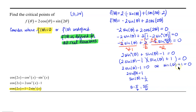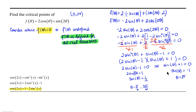For the second equation, sine of theta plus 1 equals 0 — subtracting 1 from both sides gives sine of theta equals negative 1. Thinking about the unit circle, sine of theta equals negative 1 at only one location in the interval from 0 to 2 pi, and that occurs at 3 pi over 2.